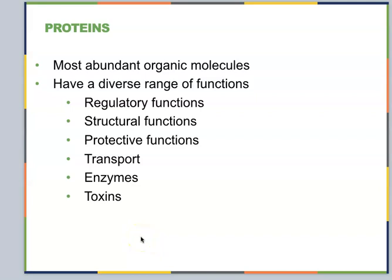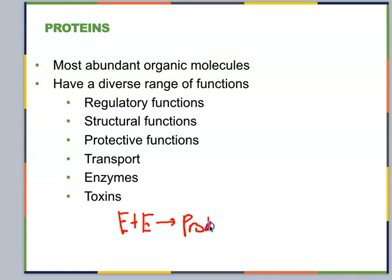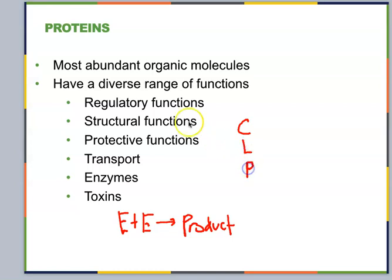Bio 121, we are now in the macromolecule section on proteins. What we've done so far is take elements combined with others to make some sort of product. If we look at all of the different types of materials found in living organisms, we can break them down into four basic groups: carbohydrates (C), lipids (L), proteins (P), which is what we're about to discuss, and nucleic acids (Na).